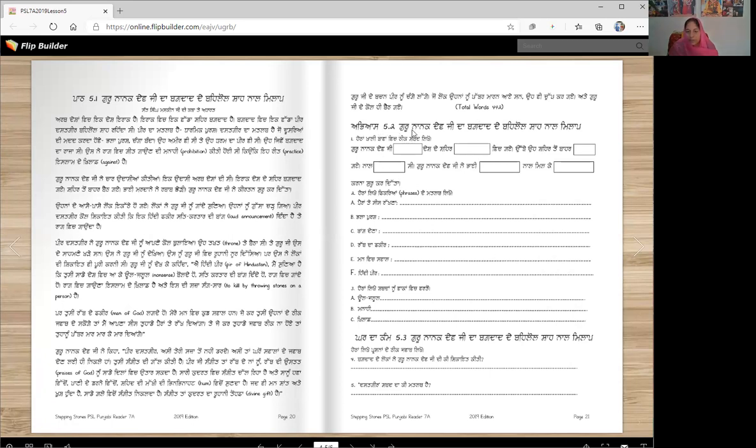Abyas 5 point. To Gurnanak Devji da Bagdad de Behlol Sharnal Milap. He taan khali Thama vich Thik shabad Likho. Gurnanak Devji Blank Desh desh Shehr Blank Vich Gai. Kede Desh Vich Gai, Kede Shehr Vich Gai? Irak Desh De Shehr Bagdad Vich Gai. Othay O Shehr To Bar Blank Gai Nal Blank Blank.